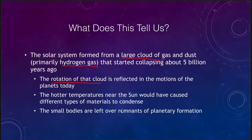If we look at that collapsing cloud, we would have had hotter temperatures near the sun that caused different types of materials to condense. The hotter temperatures near the sun meant that rock and metal materials formed planets close to the sun, while icy materials formed further away. And that gives rise to the two types of planets that we see.